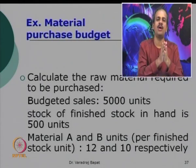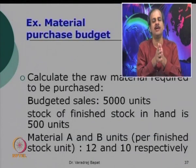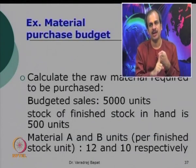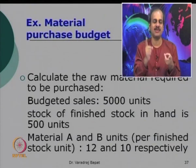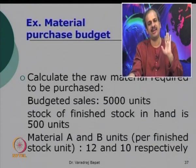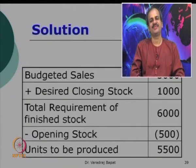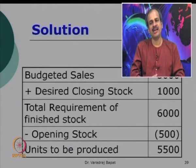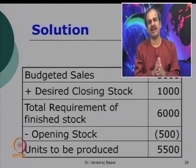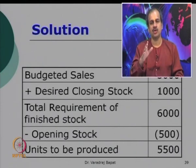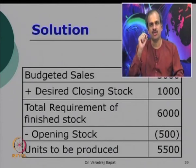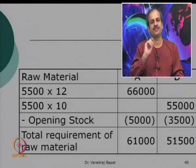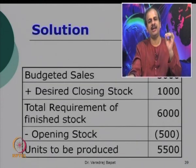There are 3 stages. We are asked to calculate the raw material purchase budget. But before that, we have to first do the production budget. Using the production budget, we will do the raw material consumption budget. Using the raw material consumption budget, we will calculate the purchase of raw material budget. Budgeted sales as given is 5000. It is desired that we must maintain closing stock of 1000. So total requirement of finished goods is 6000. We already have opening stock of 500, so 6000 minus 500: units to be produced are 5500. This 5500 is known as the production budget.